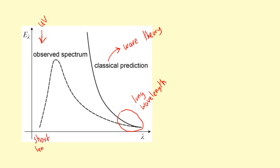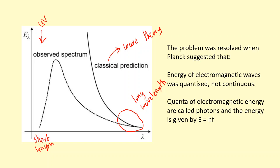To solve this problem, Planck suggested two things. Firstly, he suggested that the electromagnetic waves emitted aren't a continuous wave but they're quantized—in other words, they're photons. And that the energy of these electromagnetic waves is given by E equals hf. By putting this into the calculation, he was able to change the shape of it and it matched with the observed spectrum.